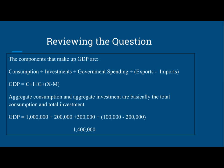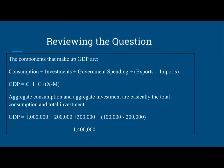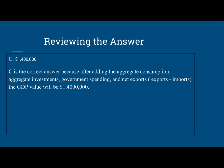I got a negative number here because exports is less than imports, and net exports is always going to be exports minus imports. Therefore, you subtract the negative $100,000 from the remaining amounts — consumption, investments, and government spending — and you total up to $1,400,000. Therefore, the correct answer is C.